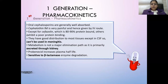Pharmacokinetics: cephalosporins are well-absorbed orally. Cephalothin IM is very painful and is given by IV route. Except for Cephalothin, which is 80–90% protein bound, others exhibit poor protein binding. They have good distribution to most tissues except the CSF, so they cannot be used in meningitis. They are primarily excreted by the kidney and are sensitive to beta-lactamase enzyme degradation.